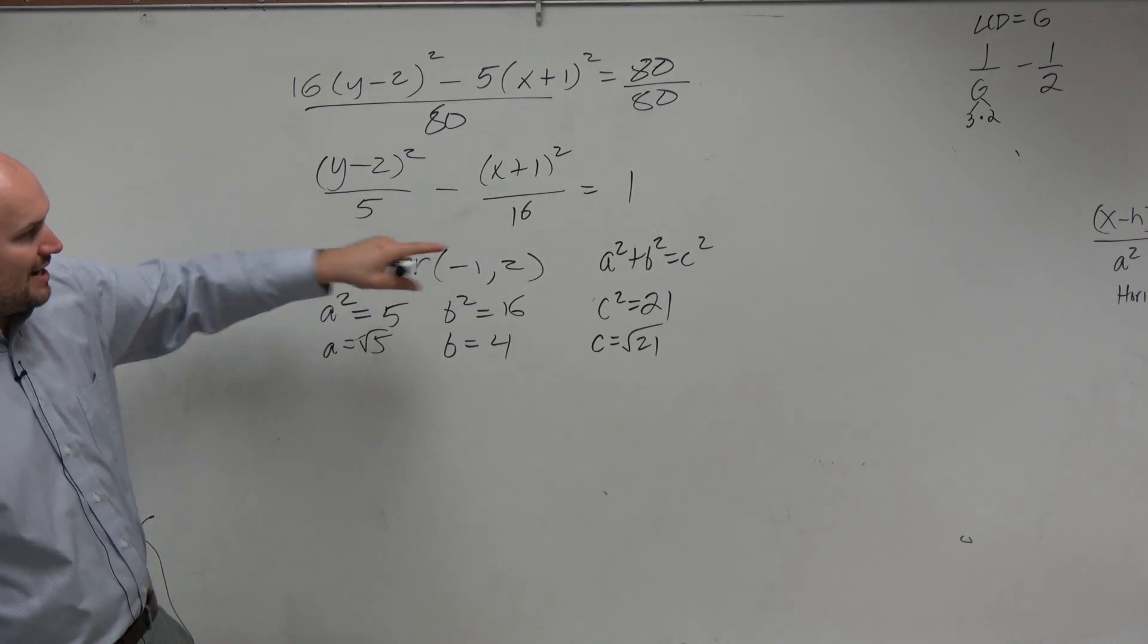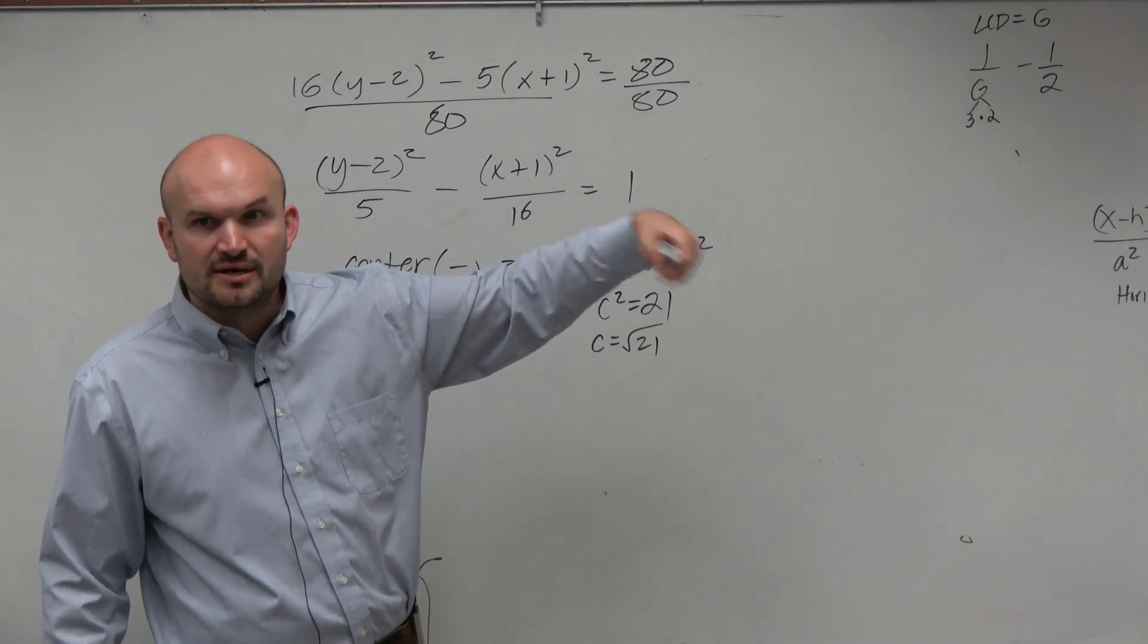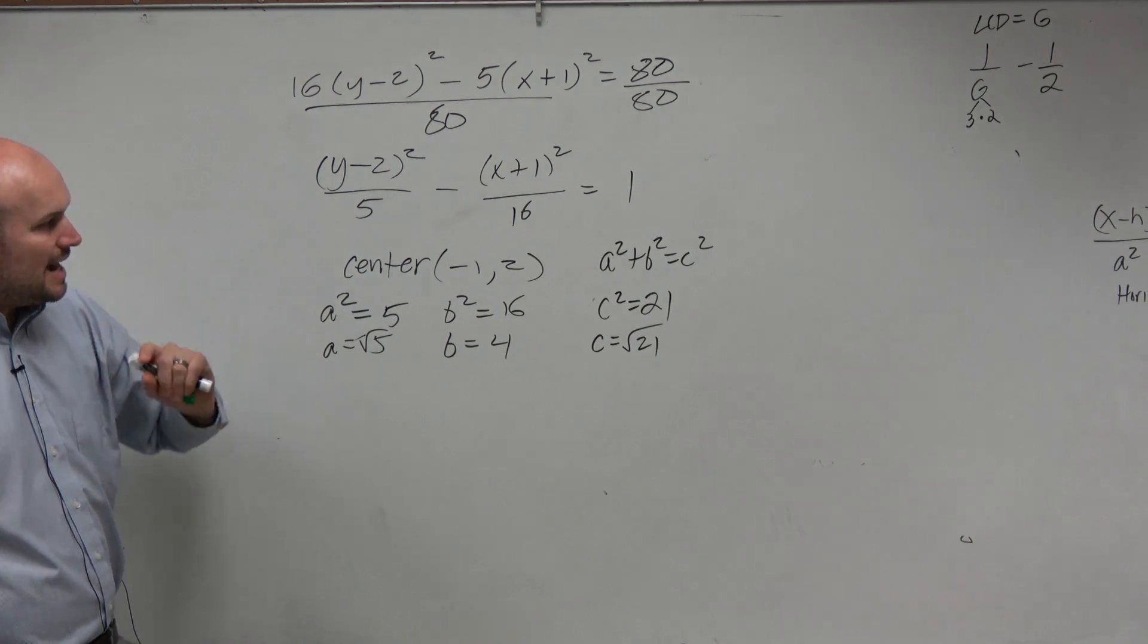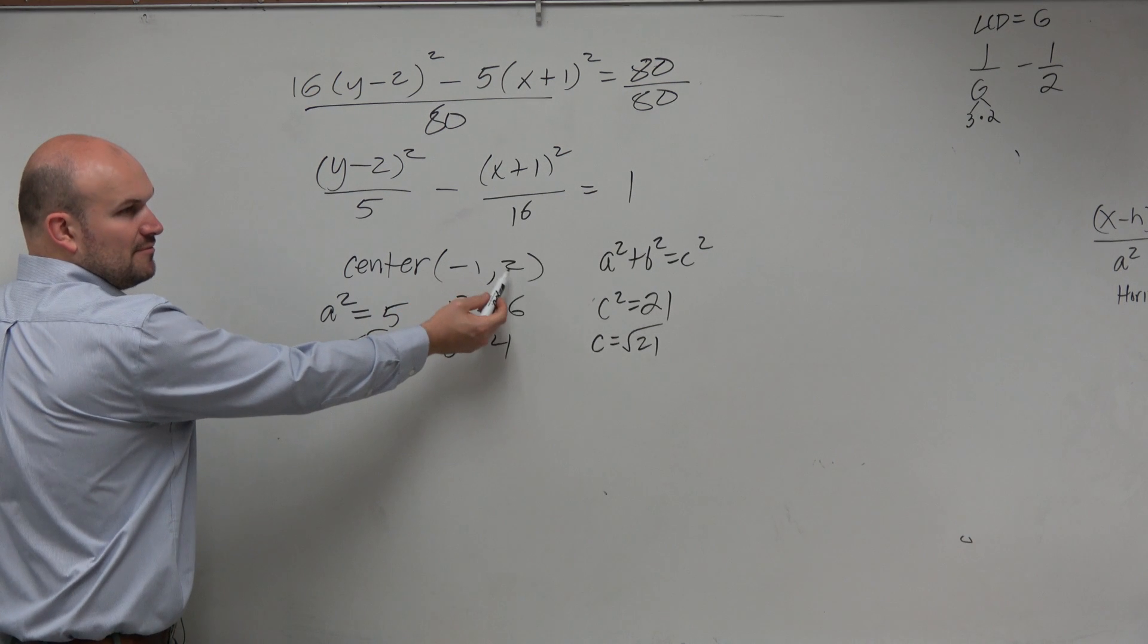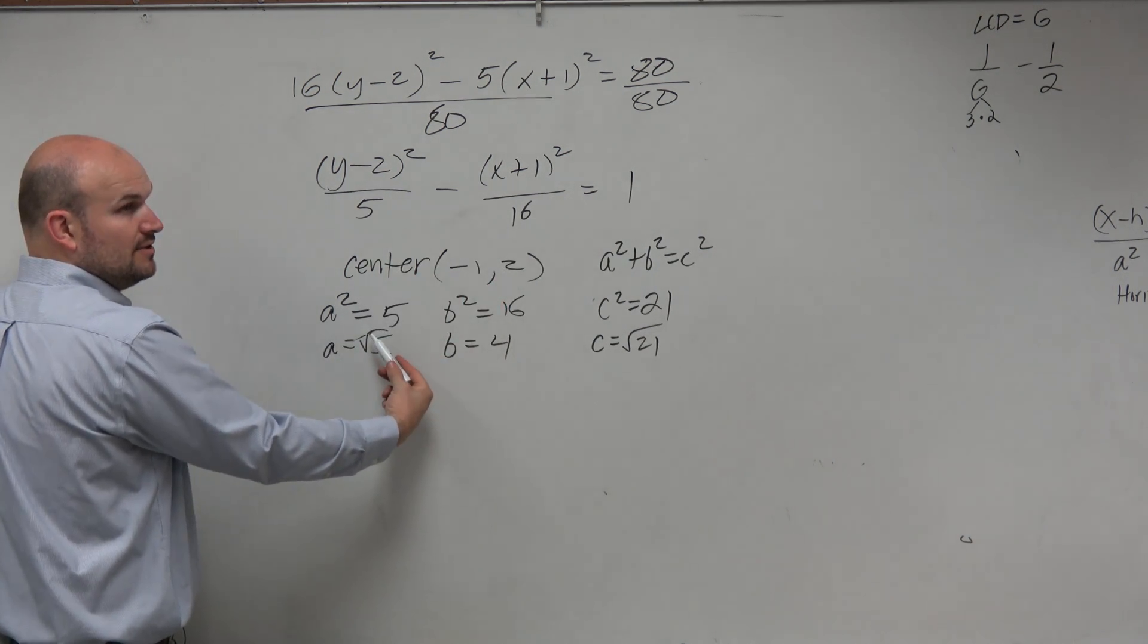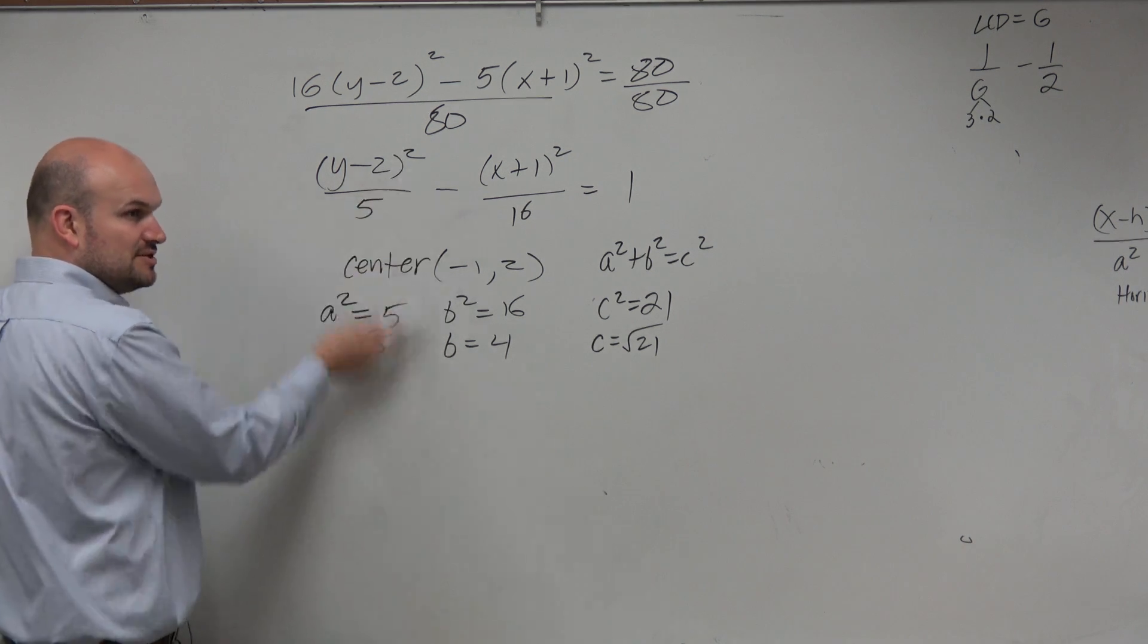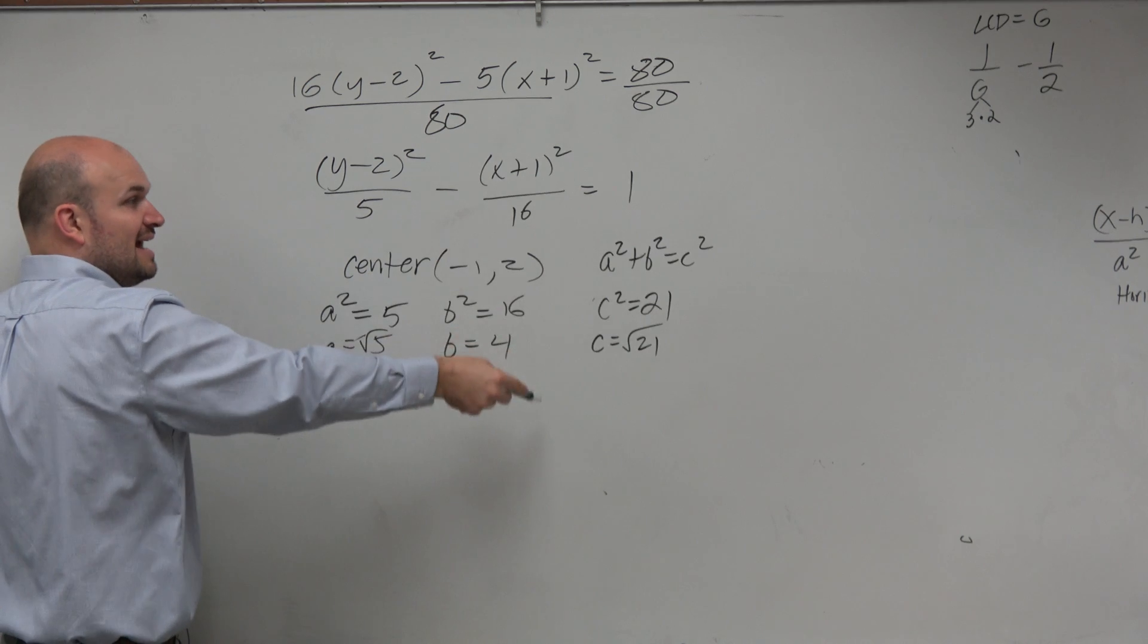If a² was under the x, like the last example, then you have a horizontal transverse axis. Since my a² is under the y, notice the two equations. You guys see how the x and y's are swapped on those two equations? So when a is under y, you have a vertical transverse axis. Now, that's important because if I'm adding and subtracting a from my center and I want to go up and down, what should I add a to? Should I add a to negative 1? Is that going to make my points go up and down? Or should I add a to 2? 2, right?